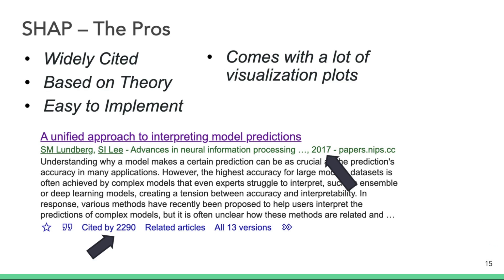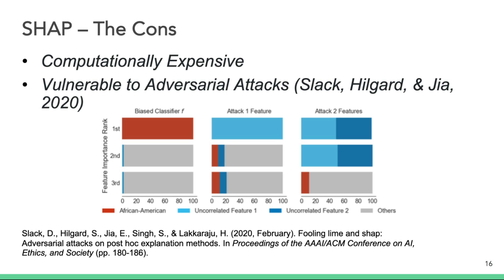When evaluating the usage of SHAP, it is important to understand the pros and cons of the method. Starting with the pros: SHAP is widely cited in the literature — at the time of this recording, there were over 2,000 citations on Google Scholar, and it is hard to find a paper on explainable AI without some reference to both LIME and SHAP. We can infer from the number of citations that SHAP is well understood by the research community. It is also relatively easy to understand for practitioners, as it is well documented and easy to implement.